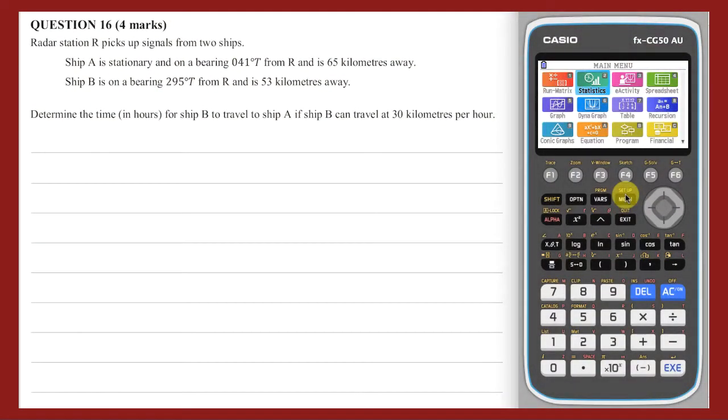Question 16. To answer this question, a diagram needs to be drawn to capture the information provided. Starting at radar station R and heading on a bearing of 41 degrees true for a distance of 65 kilometres, we can locate boat A. Next we can locate boat B on a bearing of 295 degrees true at a distance of 53 kilometres. As there are 360 degrees in a circle, we can deduce that the angle counter-clockwise from north to the line RB is 65 degrees. And so the angle ARB is 41 plus 65, which is 106 degrees.